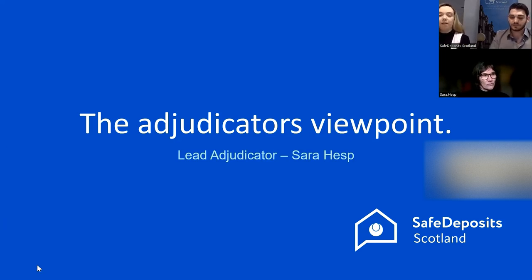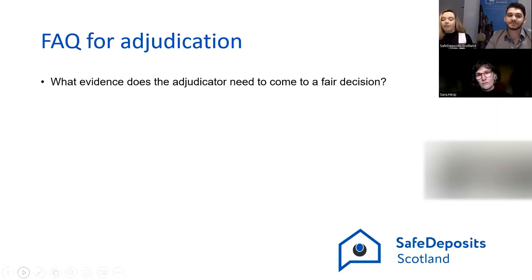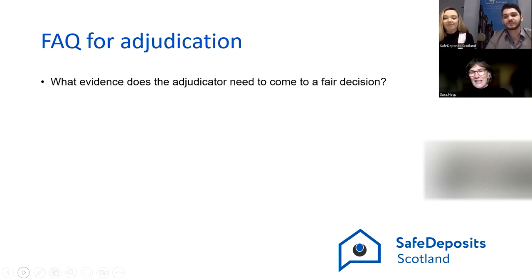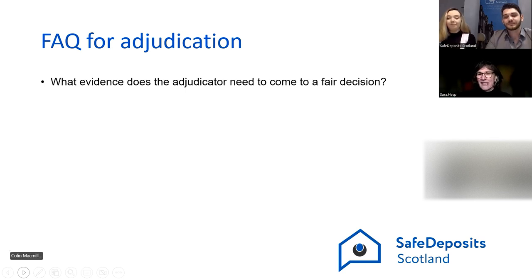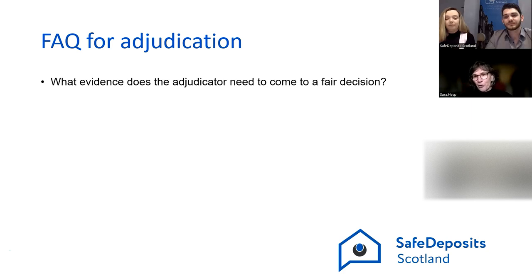So the first question we have is: what evidence does the adjudicator need to come to a fair decision? That's a really broad question. What evidence would the adjudicator like to see to come to a fair decision in general? I'll start by saying that the landlord makes a claim, so it's always for the landlord to provide sufficient evidence. In legal terms, the burden of proof lies with the landlord. It's for the landlord to prove that the tenant has breached their obligations under the tenancy agreement and that this has caused some sort of damage to the property.